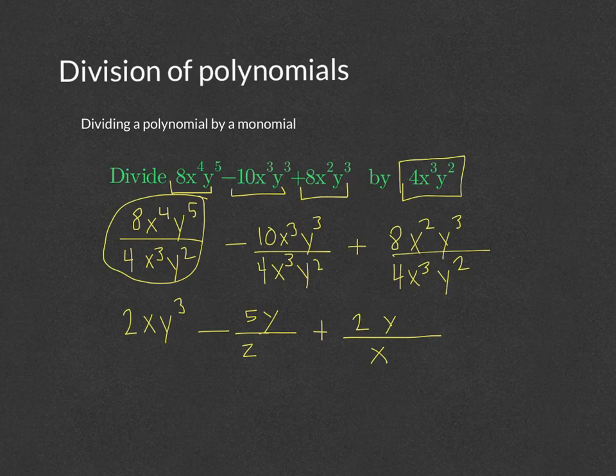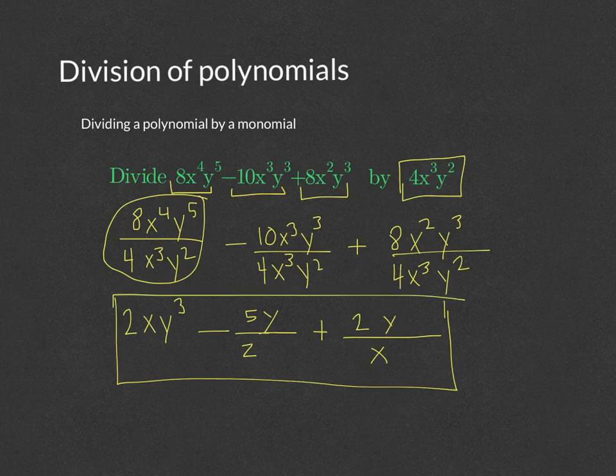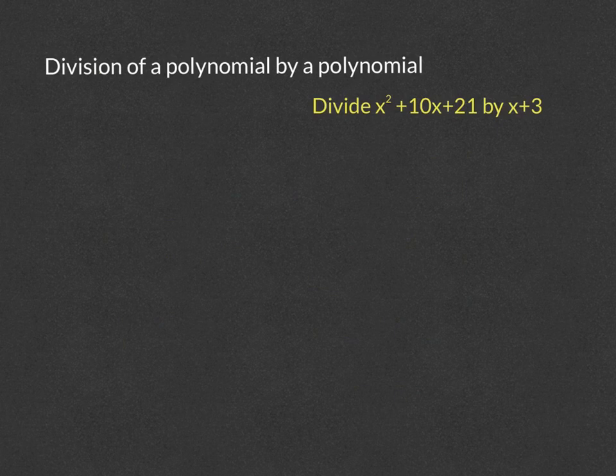So our final answer for the polynomial divided by the monomial is that result. Now let's say we want to divide a polynomial by another polynomial. We'll take a look at a very basic example first, follow the steps, and then try some harder ones.